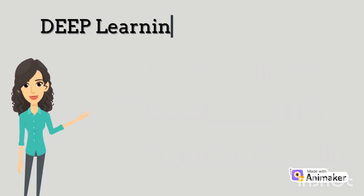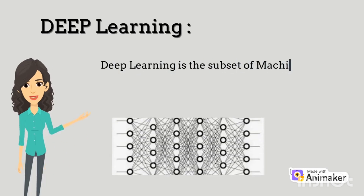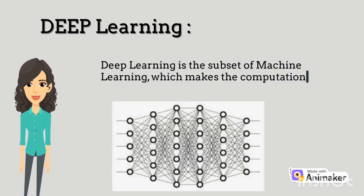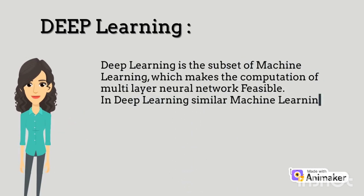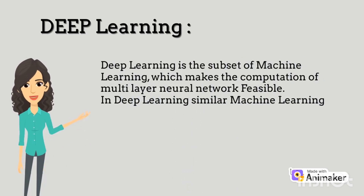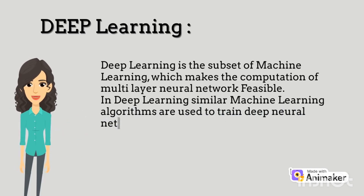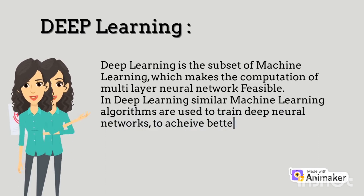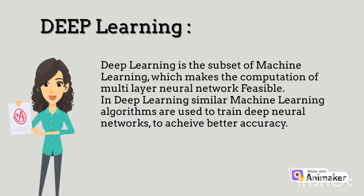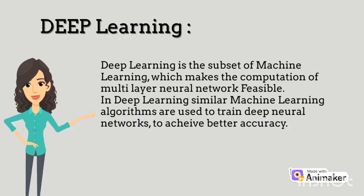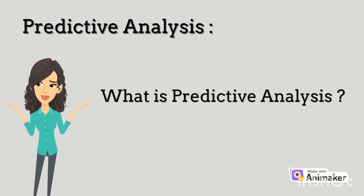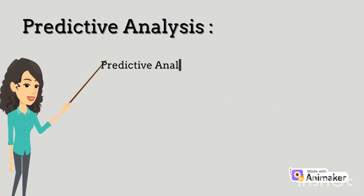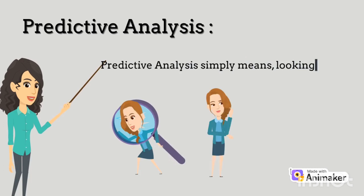Deep learning is a subset of machine learning which makes the computation of multilayer neural networks feasible. In deep learning, similar machine learning algorithms are used to train deep neural networks so as to achieve better accuracy.